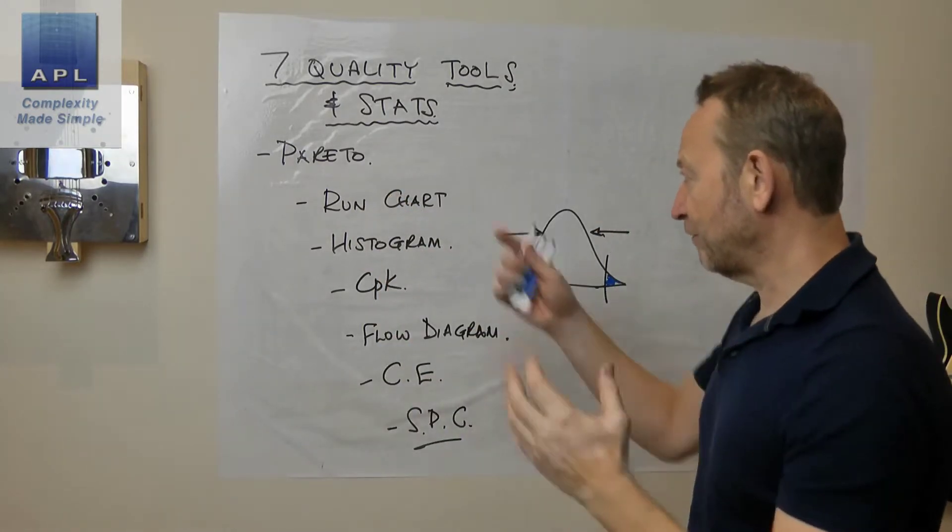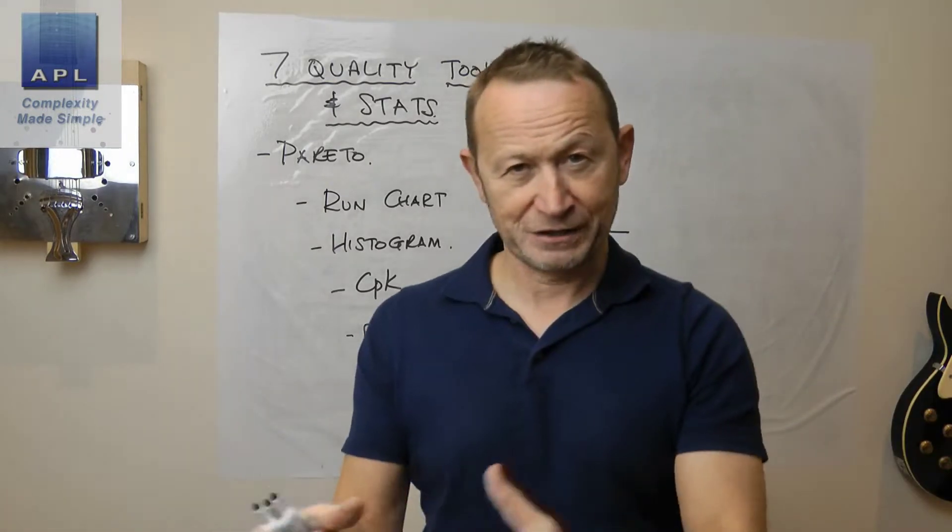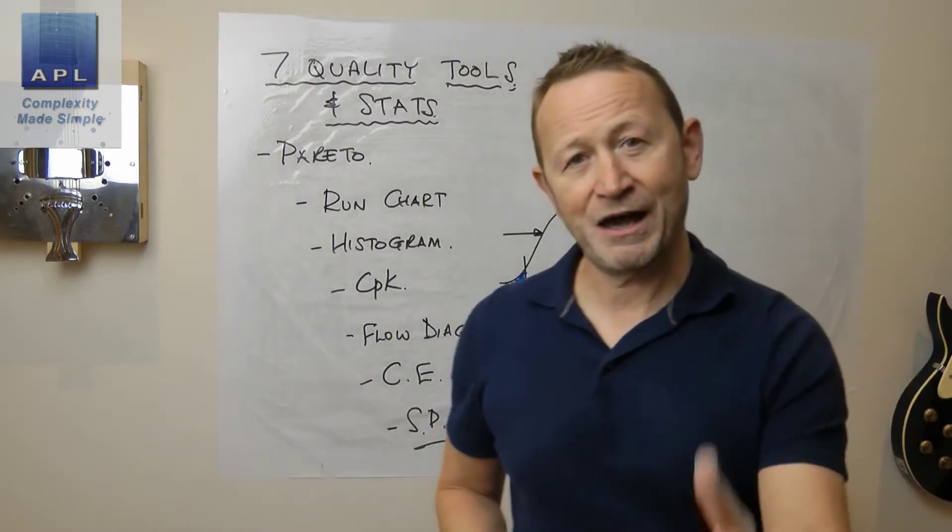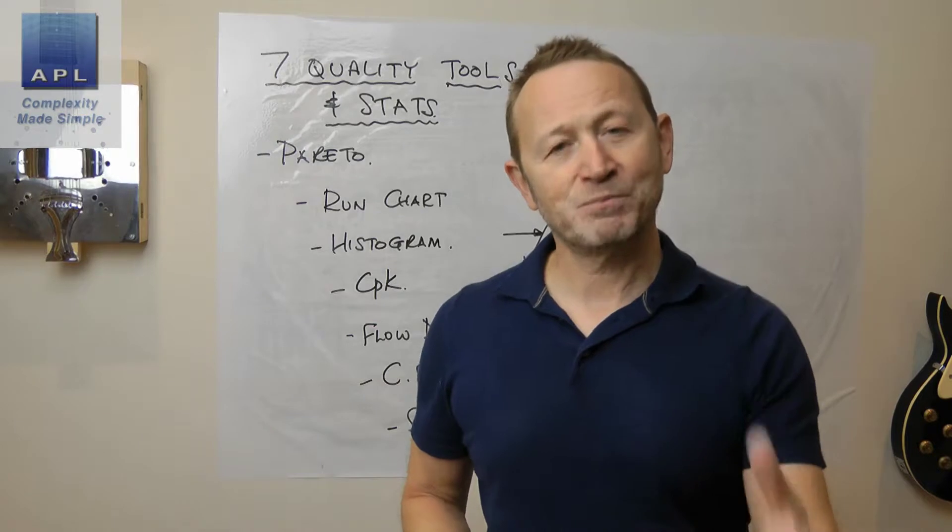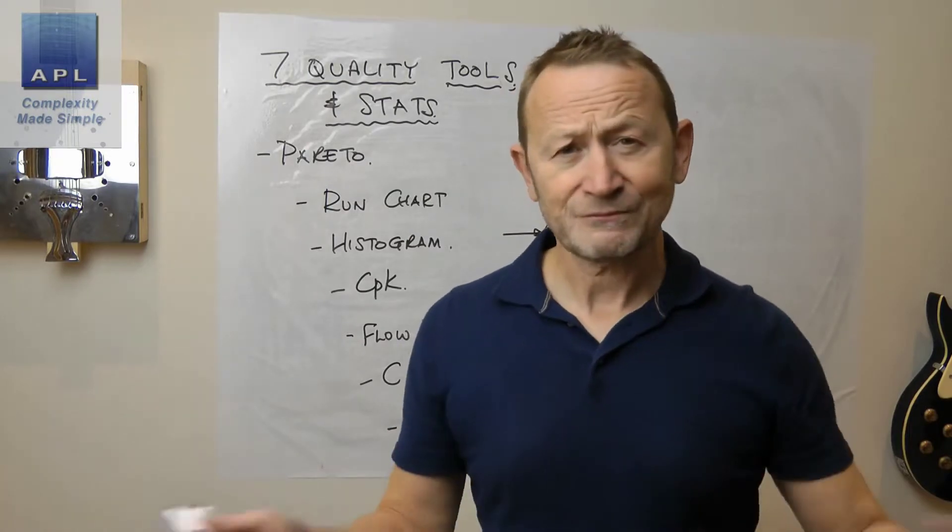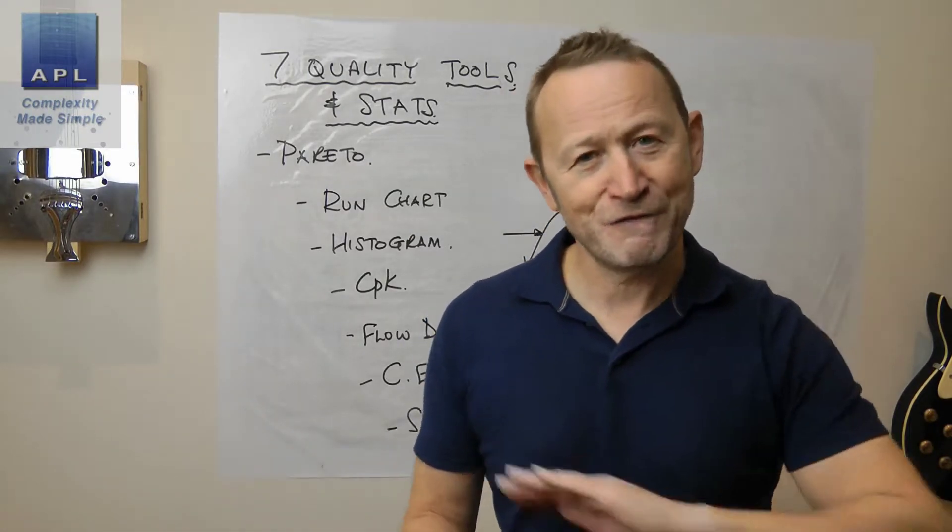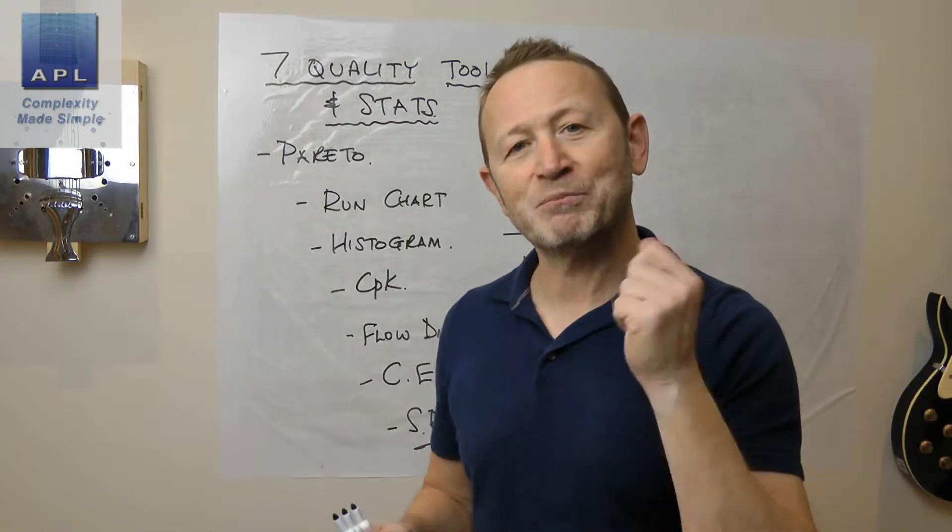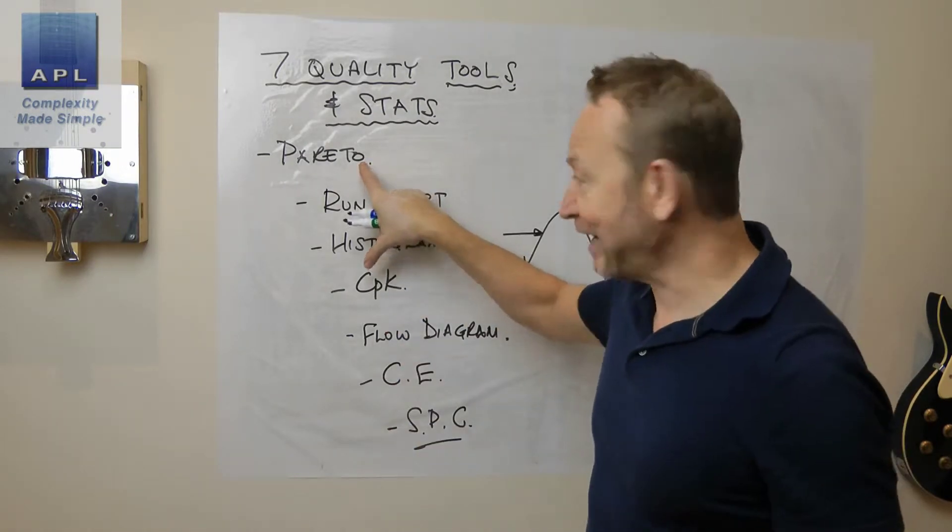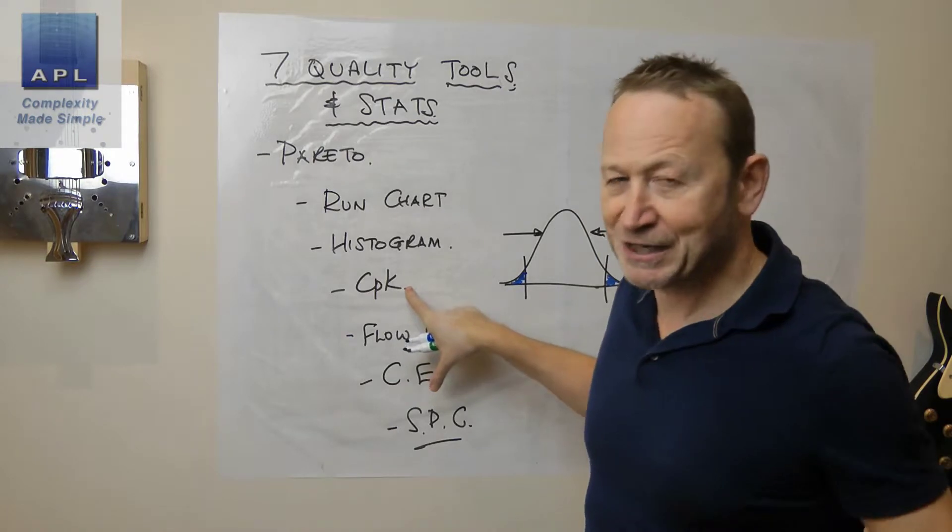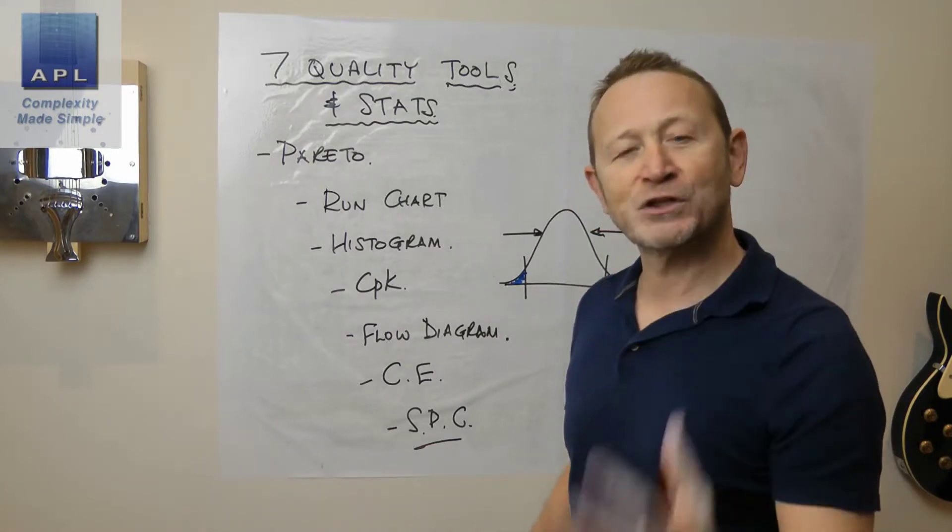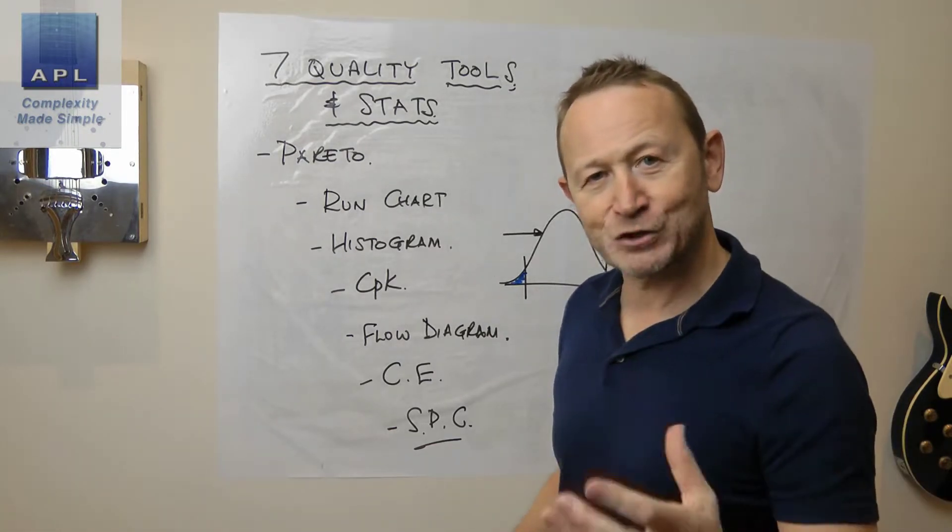We'll start off with the Pareto and the run chart at the beginning. Now the first thing at this point is going to be sample size. Now you will have been taught how to calculate sample size as part of your Six Sigma green belt or black belt class. Do I calculate sample sizes? Very, very rarely. I use simple rules of thumb. I know that I've got an estimate, so this Pareto is going to give me an estimate. This run chart, histogram, CPK are going to give me estimates. If I want to get good estimates of what's going on, what's one of the things I've got to do? I've got to have a good sample size.